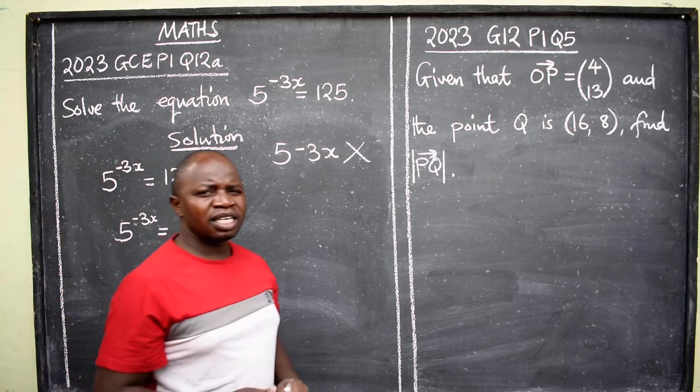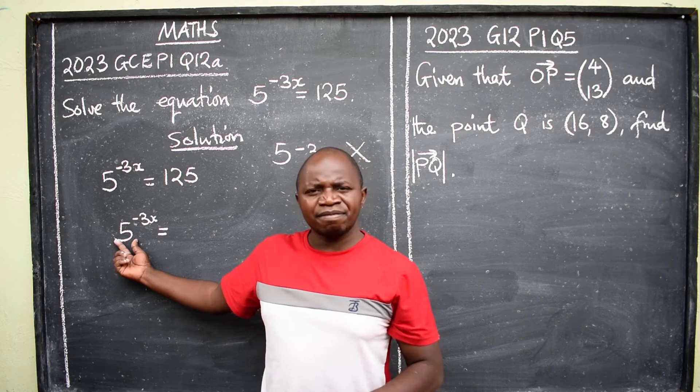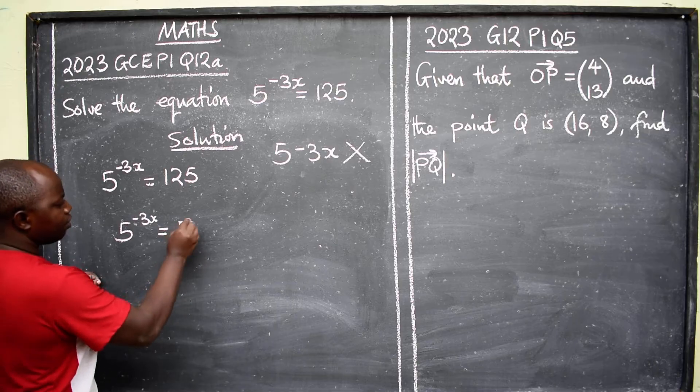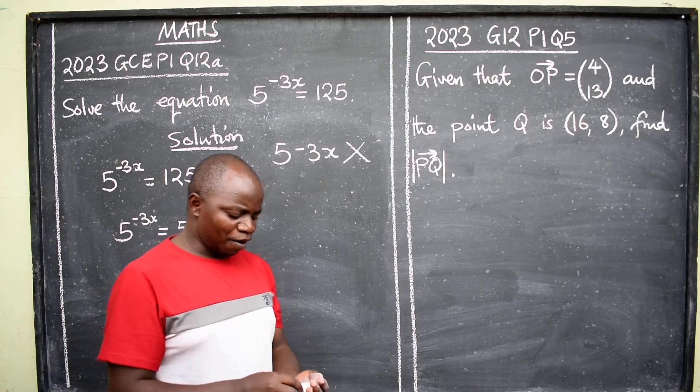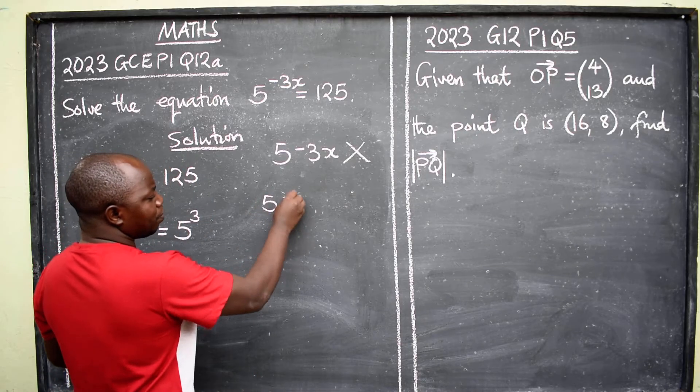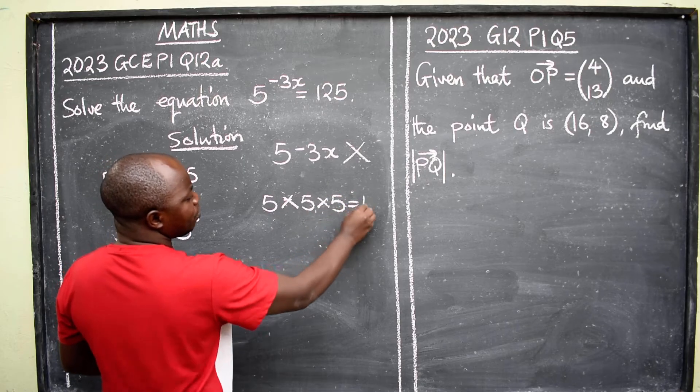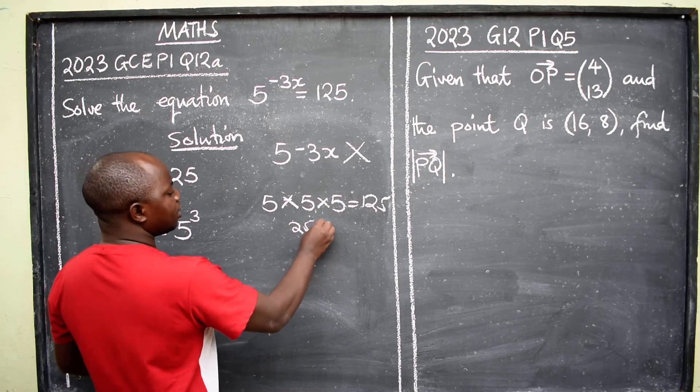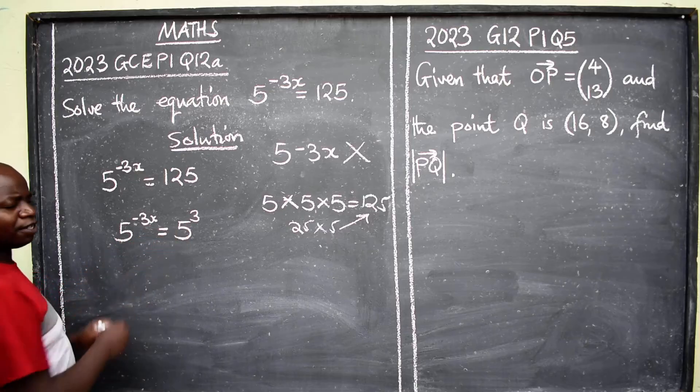So 5 to the power negative 3x is equal to 125. Can I write 125 with the base 5? Yes. What would be that? 5 to the power 3. Have you seen that? 5 to the power 3 is 125 because 5 times 5 times 5 will give you 125.